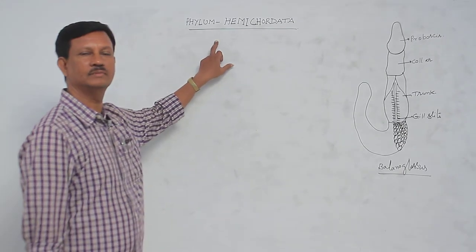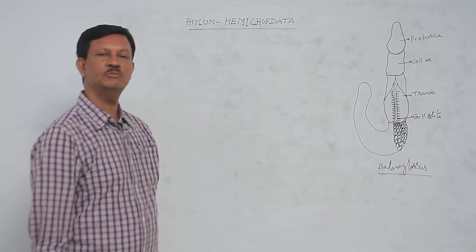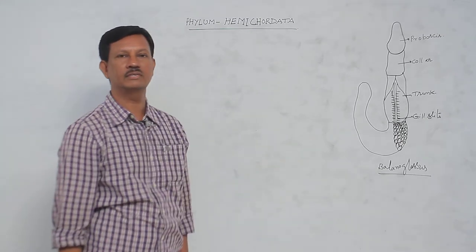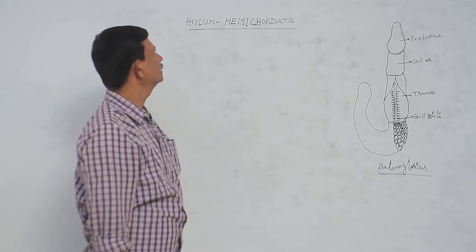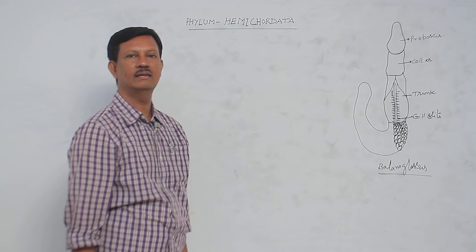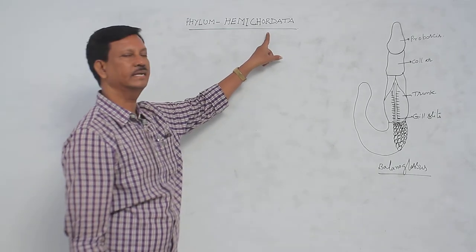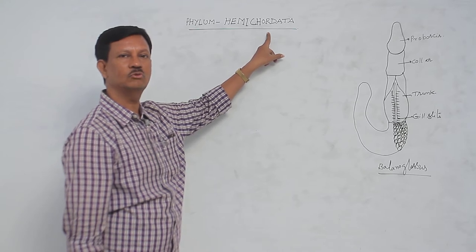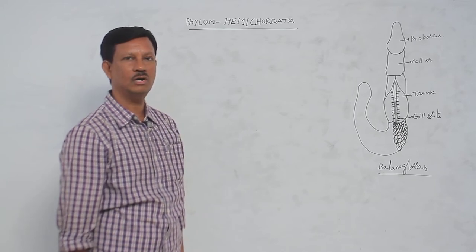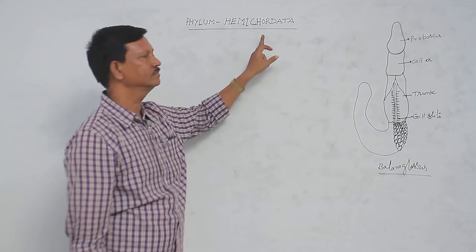Phylum Hemichordata is the last phylum of the non-chordata or invertebrata. The exact meaning of hemichordata is 'half chordates' — hemi means half. Previously, hemichordates were included in the Chordata, but recently they were removed and placed in the non-chordata due to the absence of a true notochord. Because of the doubtful nature of their notochord, they are classified under non-chordata.